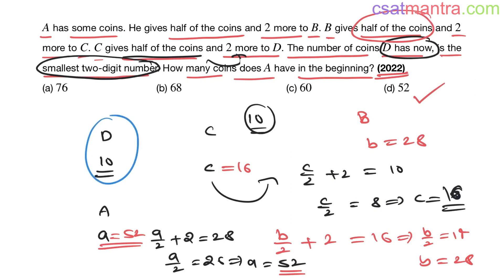See, start from here. This would make the problem simpler. D has smallest two-digit number, that is equal to 10. Then accordingly C will arrange, B will arrange, and then A. If you start from A, A by 2 plus 2, again half of that, half of that, it would complicate the problem unnecessarily. Rather, just proceed with this. D number of coins is 10, so C should be 16, B should be 28. Accordingly, A is 52.